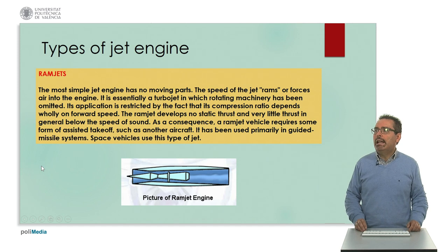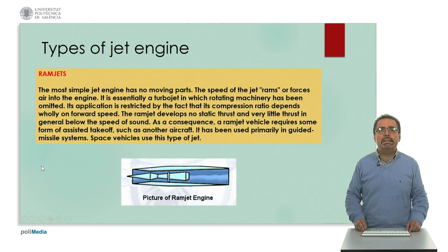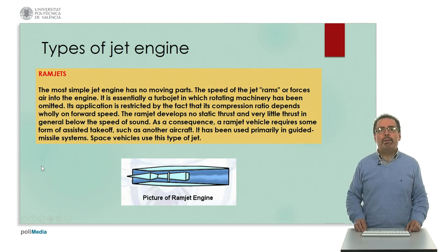Consequently, a ramjet vehicle requires some assisted form to take off — for example, another aircraft or machine to assist operations such as takeoff. It has been used primarily in guided missile systems and also in space vehicles, where this simple though very powerful type of jet engine is employed. Here we have a picture of this type of engine.